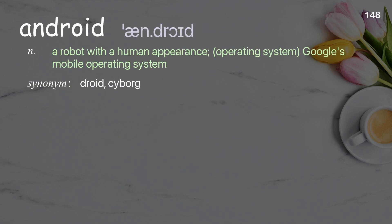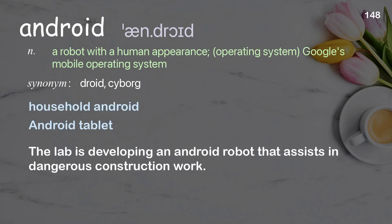Android: A robot with a human appearance; Google's mobile operating system. Examples: Household android. Android tablet. The lab is developing an android robot that assists in dangerous construction work.